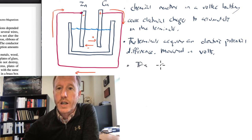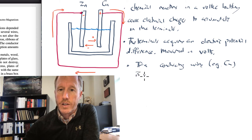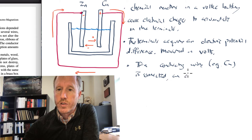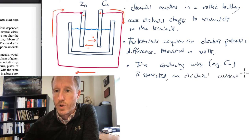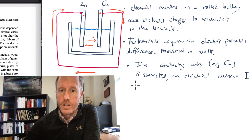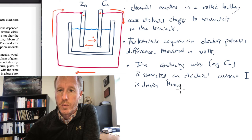So let me just write that down. If a conducting wire, such as copper, is connected, an electrical current, and this is typically denoted by the letter I, is driven through the wire.